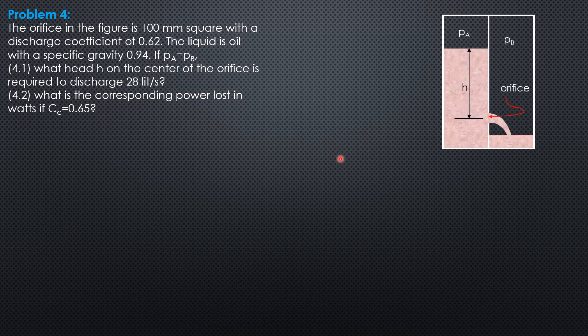For part 1, Q equals C times A times square root of 2gh, where C is the coefficient of discharge, A is the area of the orifice, and h is the upstream head minus downstream head.